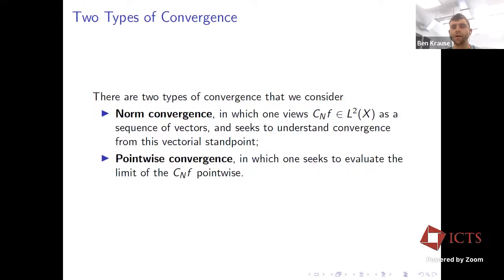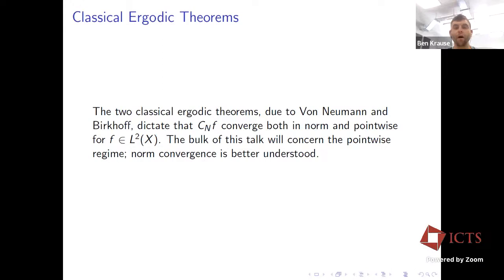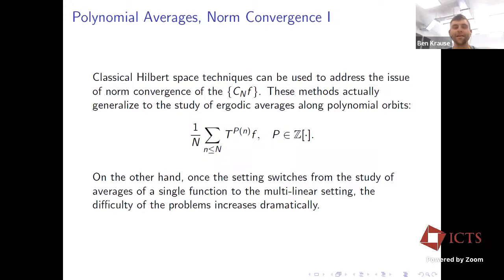In the first example we're squinting at our Cesàro averages as vectors. In the second we're investigating sequences of numbers as we vary physical location. The two classical ergodic theorems, due to von Neumann and Birkhoff, dictate that Cesàro averages converge both in norm and pointwise — for square-integrable functions and integrable ones, respectively.